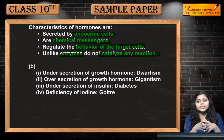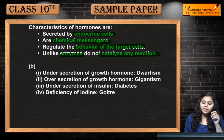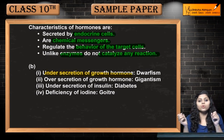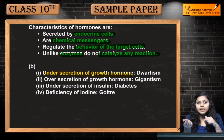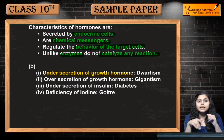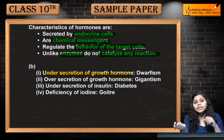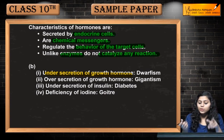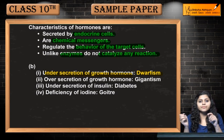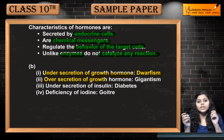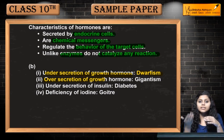If there is under-secretion of growth hormone, growth will not occur, resulting in dwarfism. If there is over-secretion of growth hormone beyond normal levels, then it will result in gigantism.